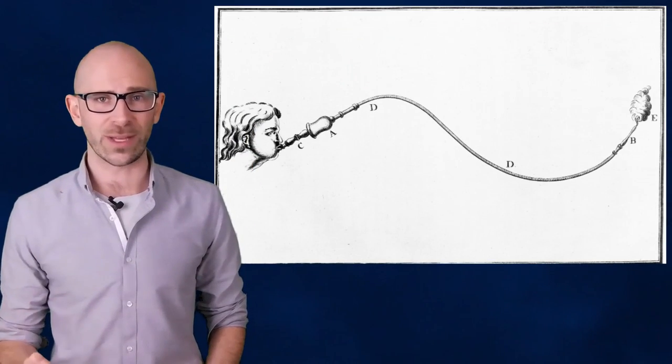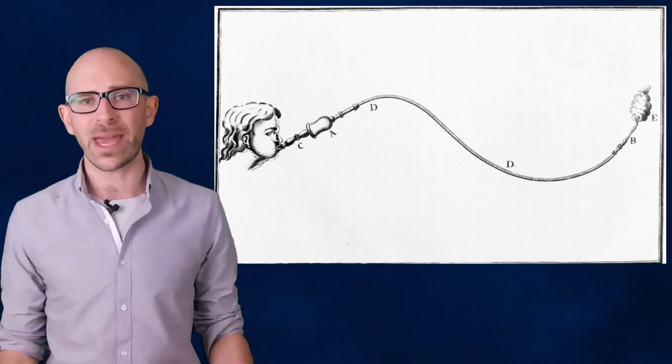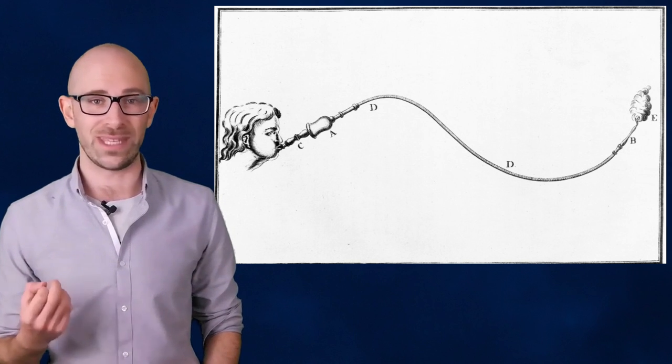The practice of using tobacco smoke enemas on drowning victims quickly spread as a popular way to introduce tobacco into the body to treat an array of other medical conditions, including headaches, hernias, respiratory ailments, and abdominal cramps, among many other things. Tobacco enemas were even used to treat typhoid fever and during cholera outbreaks when patients were in the final stages of the illness.